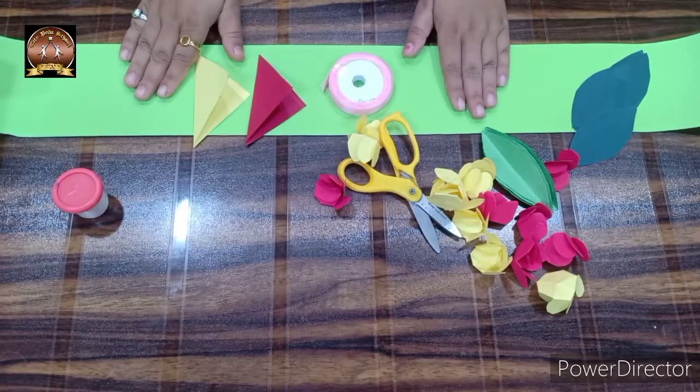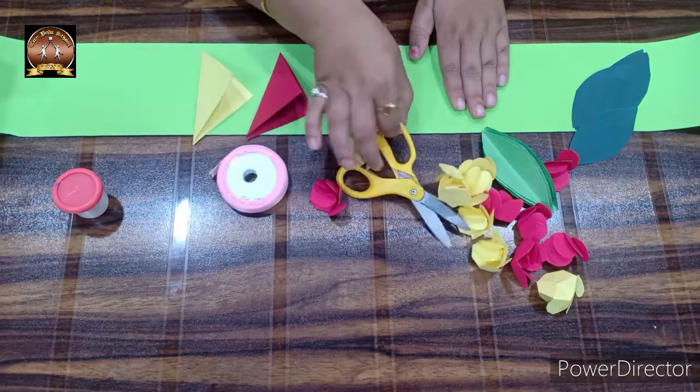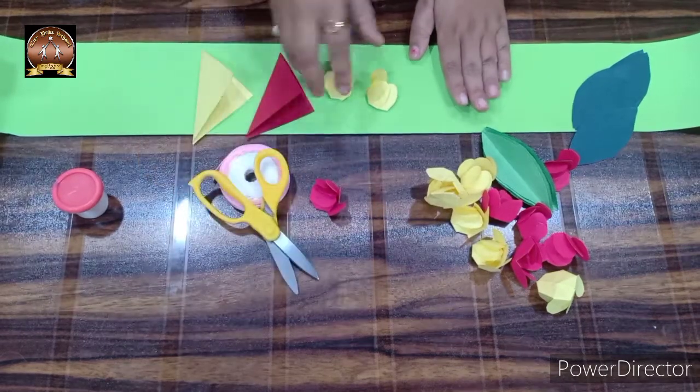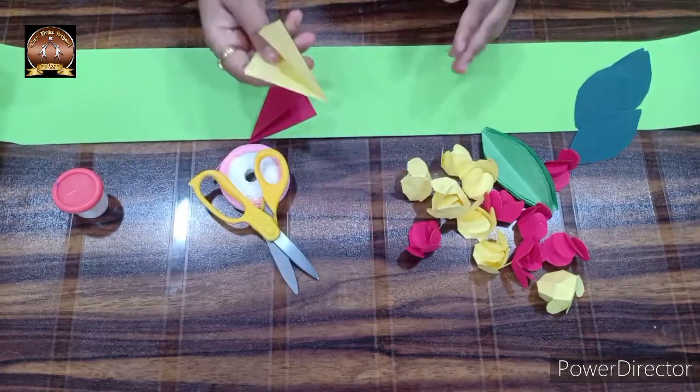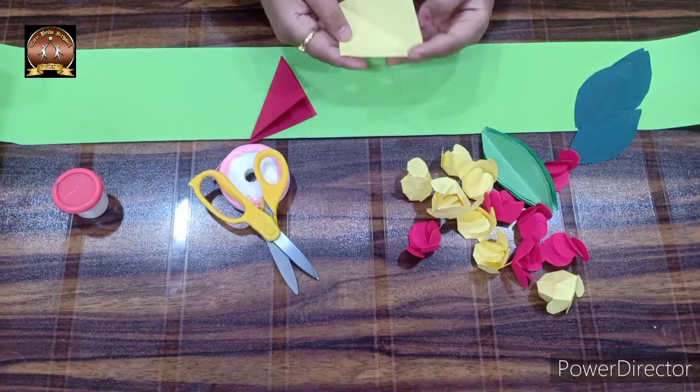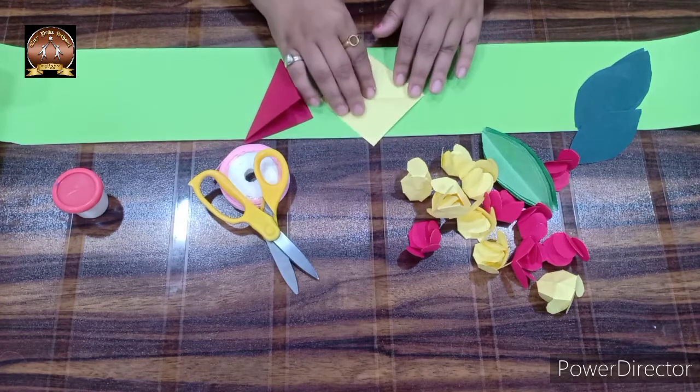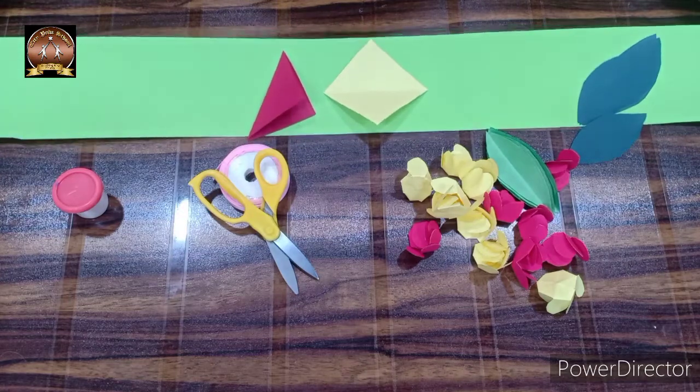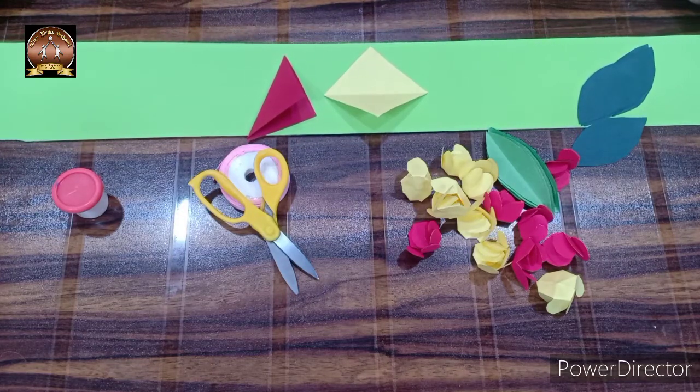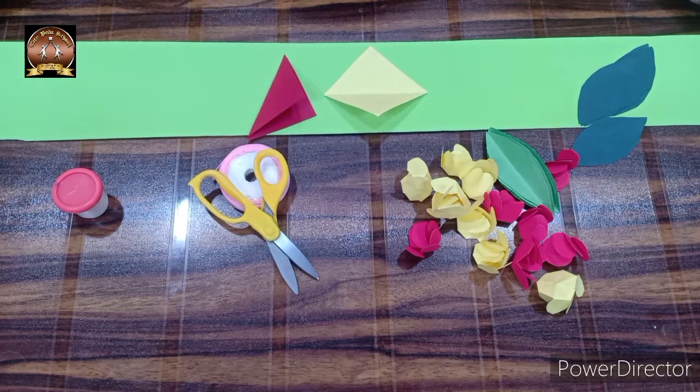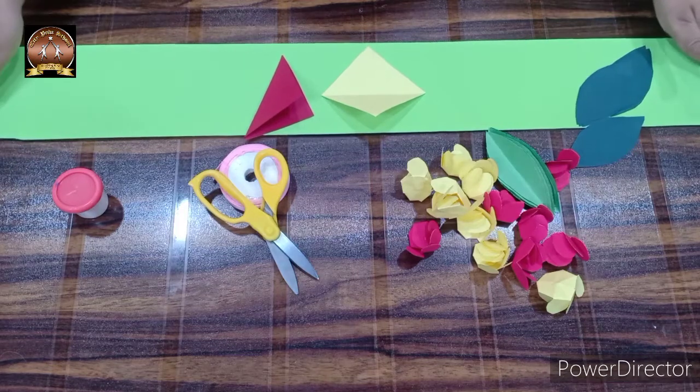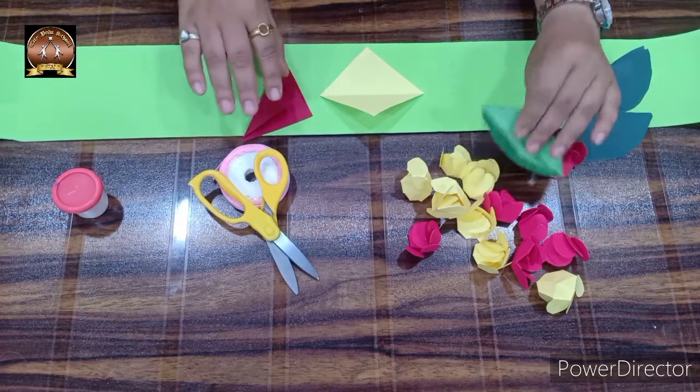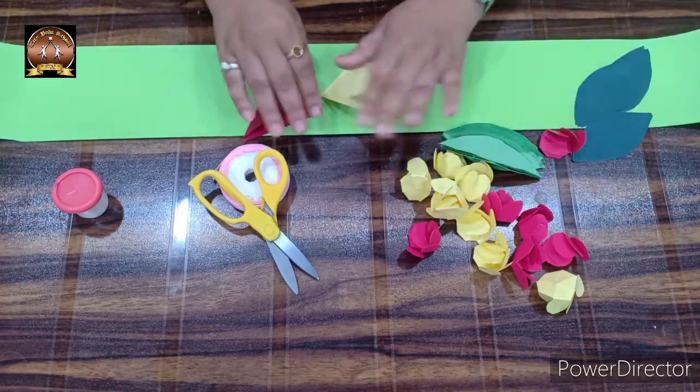For this toran-making activity, children, we need satin ribbon, scissors, and square papers 8 cm by 8 cm that I asked you to prepare. We also need a strip cut to the measurement of your door length. Then I have cut some leaves for decoration.